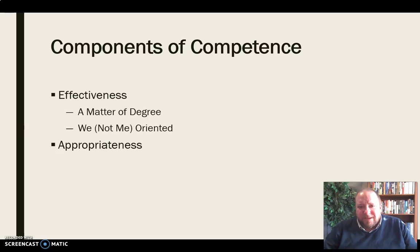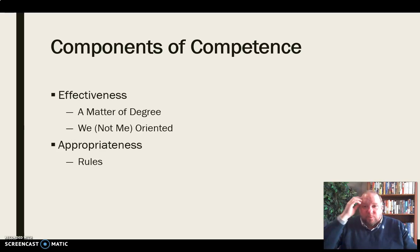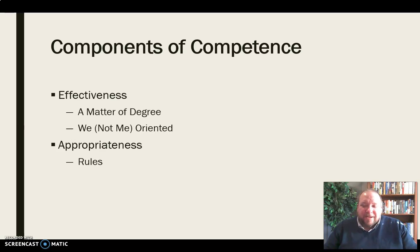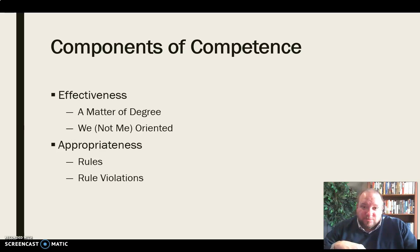In addition to effectiveness, we need to consider the appropriateness of our communication. By that we mean: are we following the rules for that particular situation, that particular context, that particular culture, that particular relationship? All of these situations have rules, and with that we have different rules that govern the use of language — things like phonetic rules, syntactic rules, and pragmatic rules. We need to consider whether or not we are communicating appropriately, following the rules for that particular communication scenario.